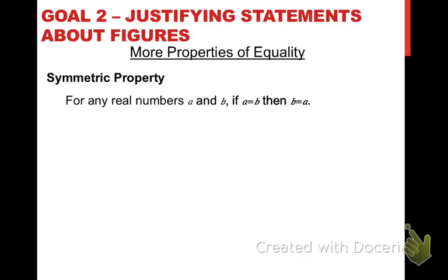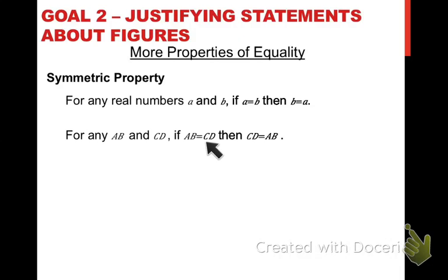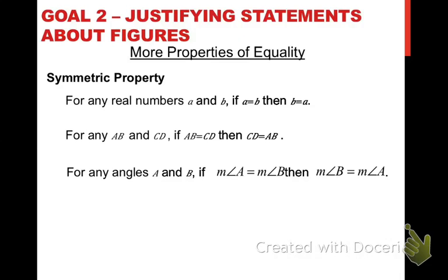How would that look with distances? Well, if I had the distance from A to B and C to D, and I knew that those were equal — AB equals CD — then I also know that CD equals AB. Very simple. And if I have any angles A and B, and I know that the measure of angle A equals the measure of angle B, well then I can turn that equation around using the symmetric property of equality and say that the measure of angle B equals the measure of angle A.